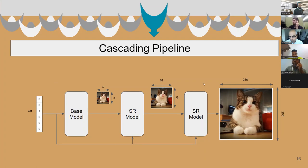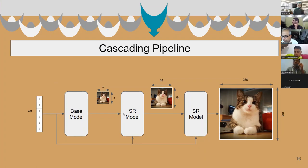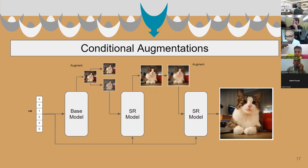This is all good, but everything until now was already known. The cascading pipeline was known — it was previously used in GANs and other models. Super-resolution diffusion models were also known. What the paper did extra is, first of all, they made the cascading pipeline actually work for the diffusion model, and secondly, and most importantly, they showed that adding augmentations to in-between steps actually helps.